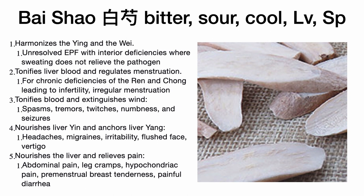Remember, Gui Zhi treats irregular menstruation due to cold obstructing the uterus, while Bai Shao treats irregular menstruation due to blood deficiency — a key distinction, though the two herbs can be combined to treat both. Bai Shao also tonifies blood and extinguishes wind, treating spasms, tremors, twitches, numbness, and seizures, because in Chinese medicine neurological symptoms are closely related to the liver. It also nourishes liver yin and anchors liver yang.